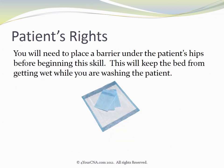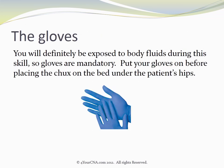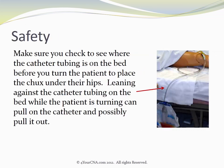You will need to place a barrier under the patient's hips before beginning this skill. This will keep the bed from getting wet while you are washing the patient. You will definitely be exposed to body fluids during this skill, so gloves are mandatory. Put your gloves on before placing the chucks on the bed under the patient's hips. Make sure you check to see where the catheter tubing is on the bed before you turn the patient to place the chucks under their hips, as leaning against the catheter tubing while the patient is turning can pull on the catheter and possibly pull it out.